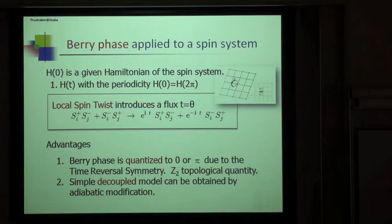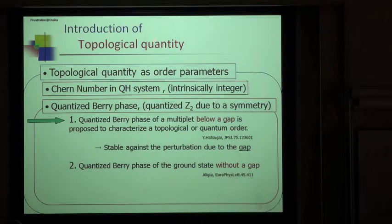These terms in the Hamiltonian are modified. We get two advantages here. One is the Berry phase is quantized to zero and π due to the time-reversal symmetry in the spin system. It means that Z₂ topological quantity. Second one is a simple decoupled model can be obtained by the adiabatic modification. The quantized Berry phase is a topological quantity.